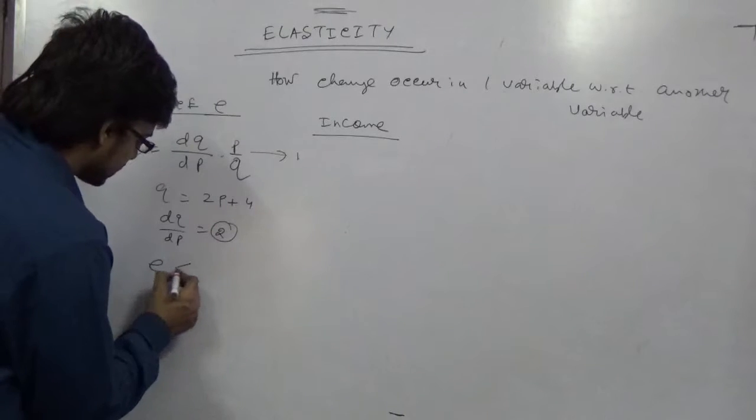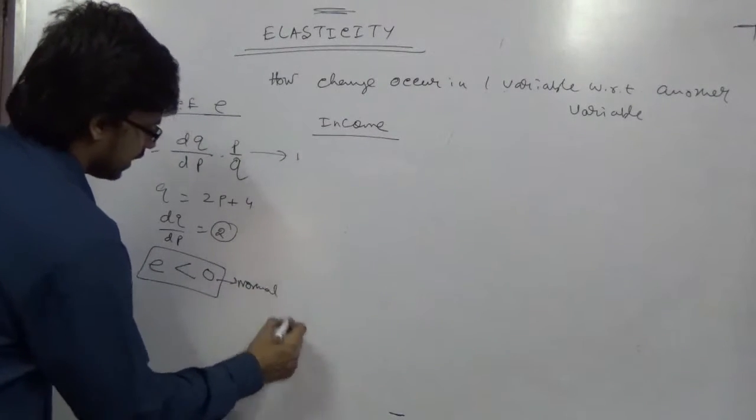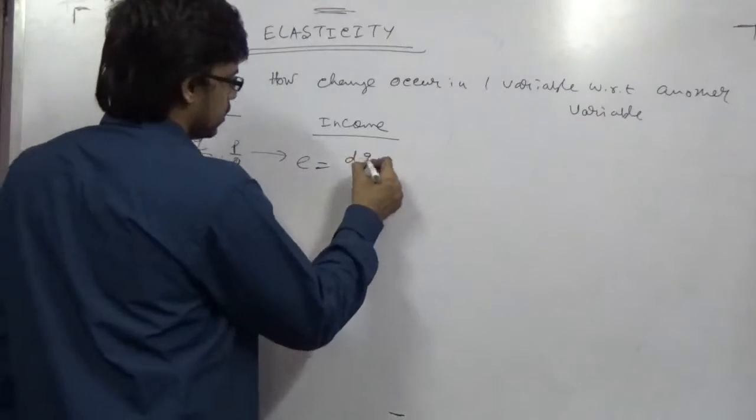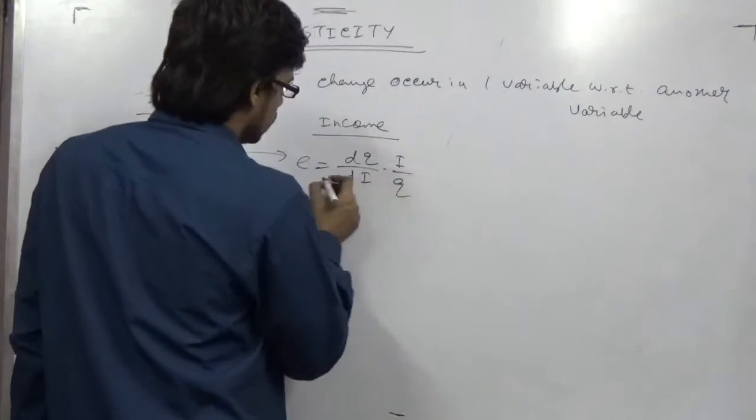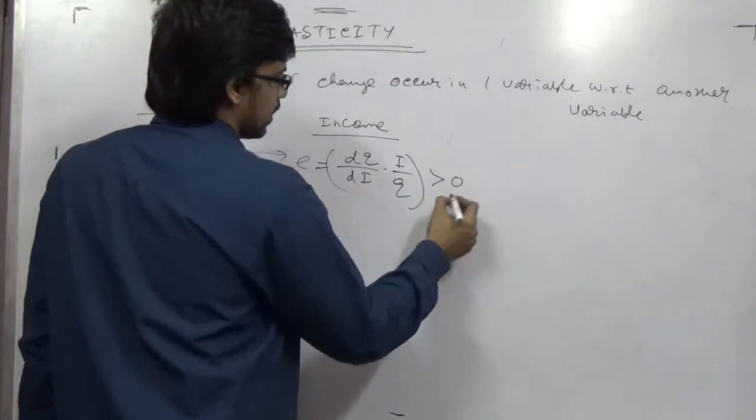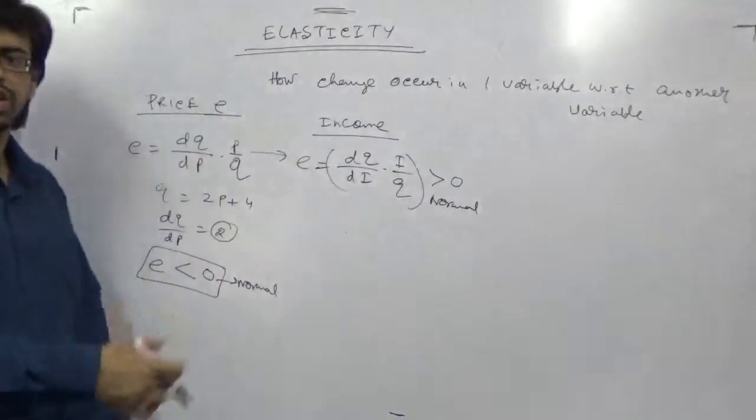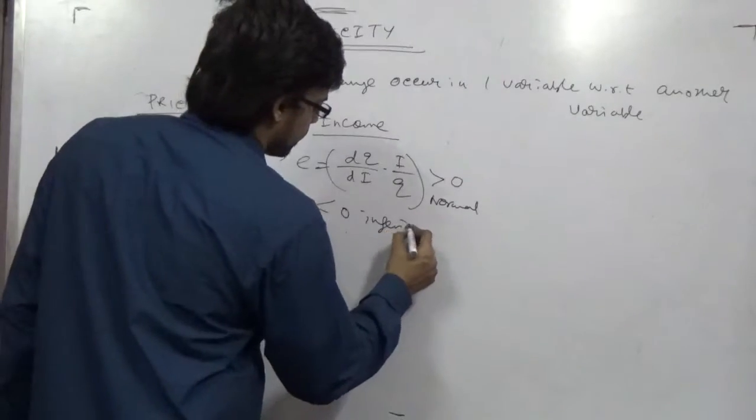So for a normal product, elasticity of price is negative. So here also this is dq by di into i by q. In general this is greater than 0 for normal product, and for relatively inferior products less than 0 for inferior.